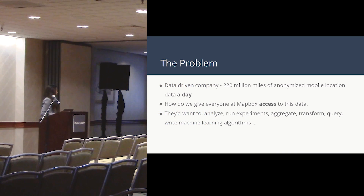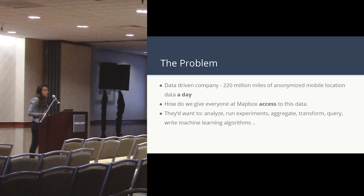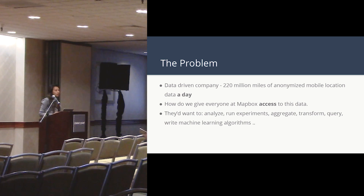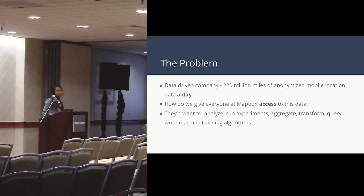Let's start with what the problem is. For those of you who are not familiar with what Mapbox does, we provide SDKs, APIs, and tooling for developers who want to integrate maps and navigation in their applications. To this day, we have one million registered developers, and this means we collect data back from around 300 million applications running Mapbox. This maps out to around 220 million miles of anonymized mobile location data per day.